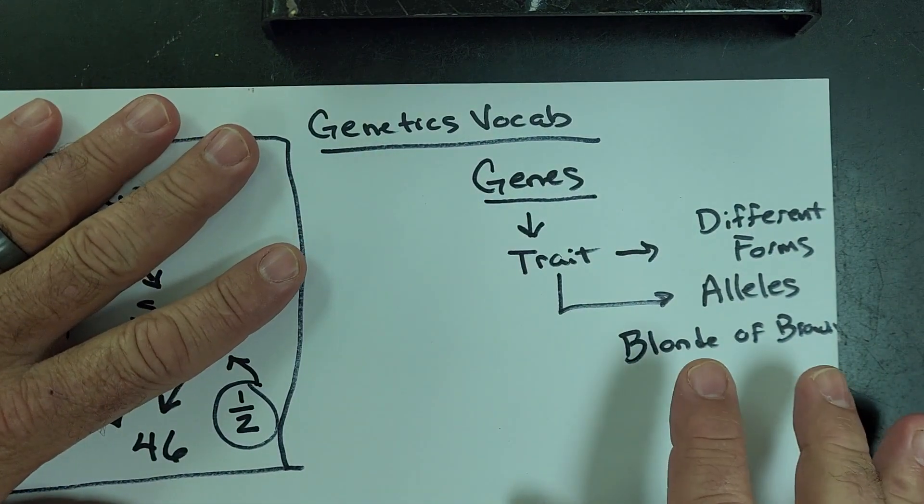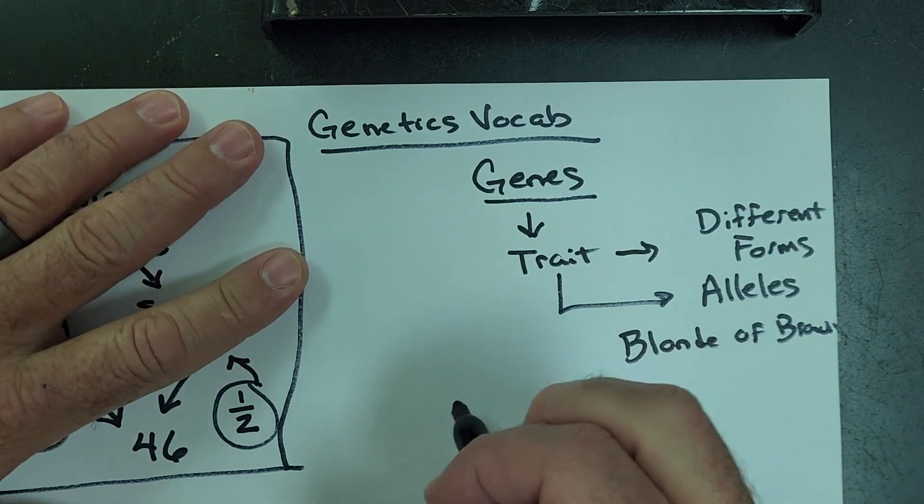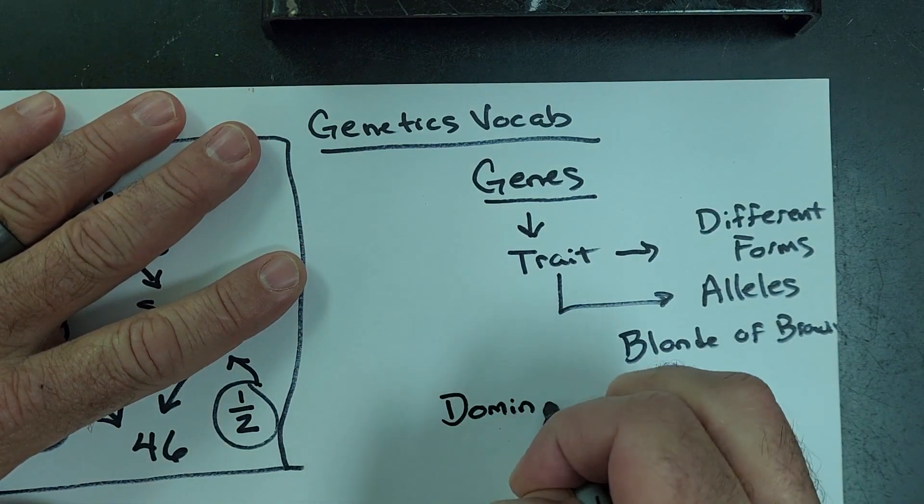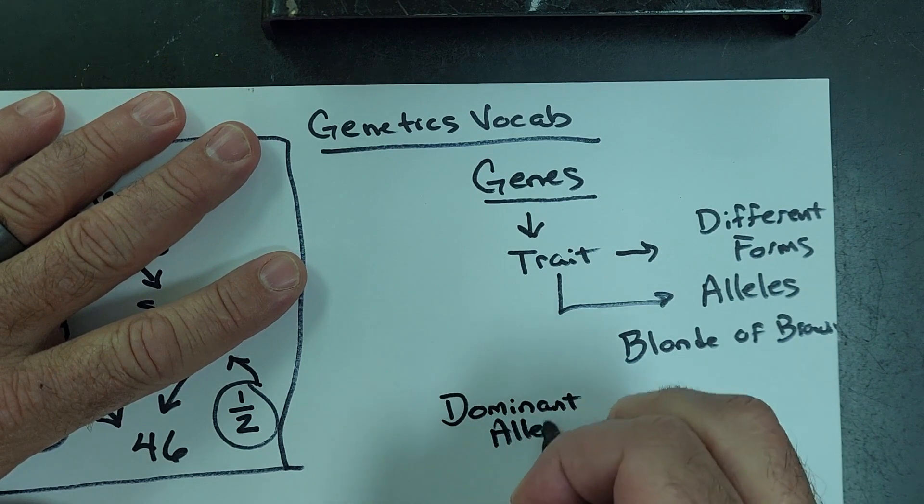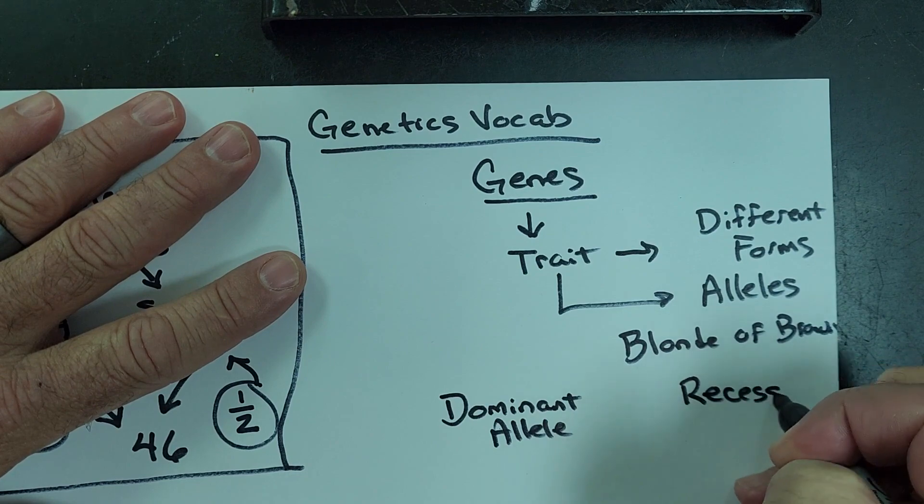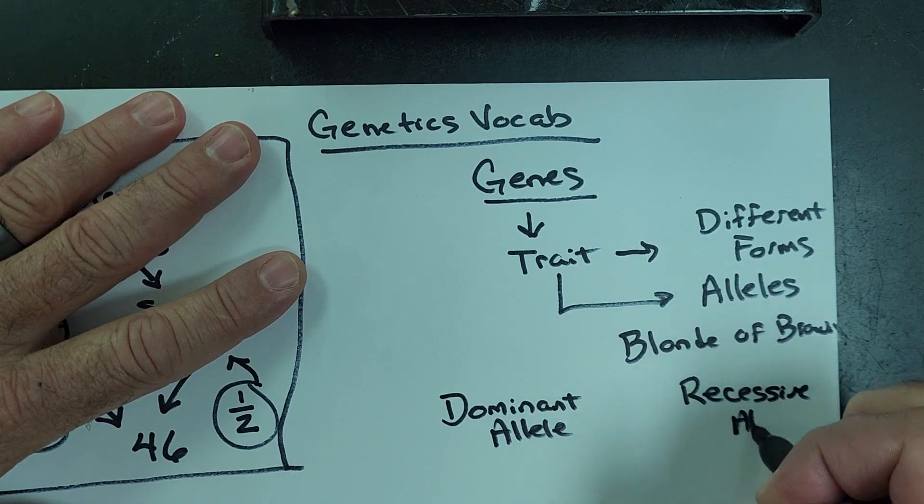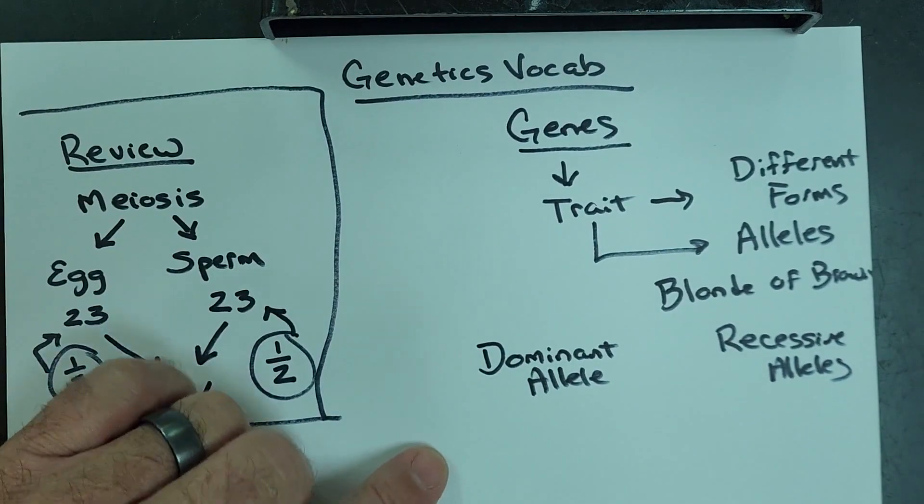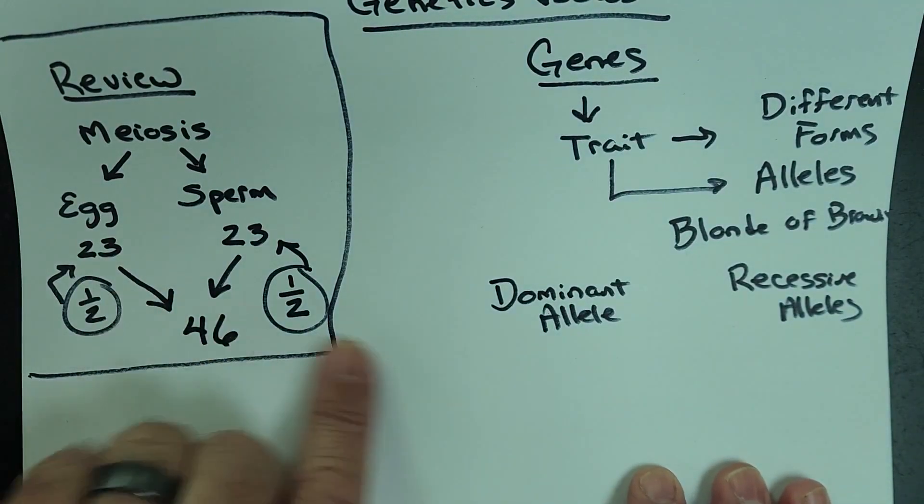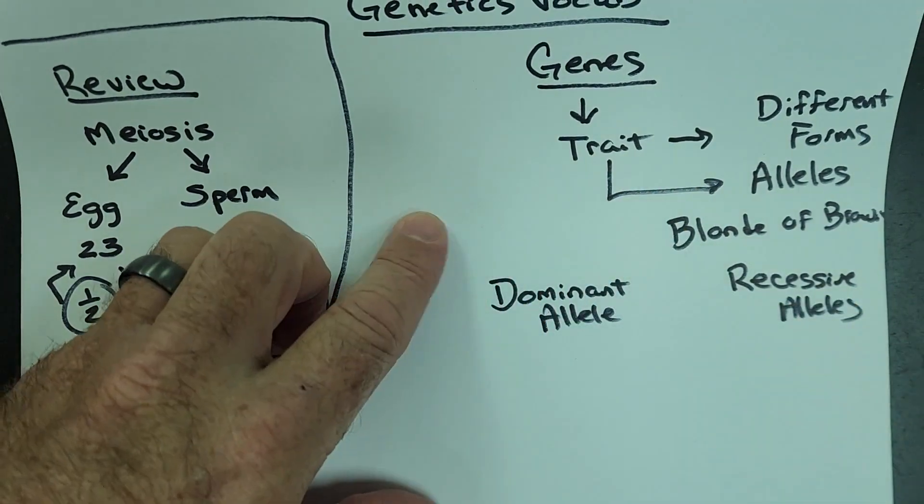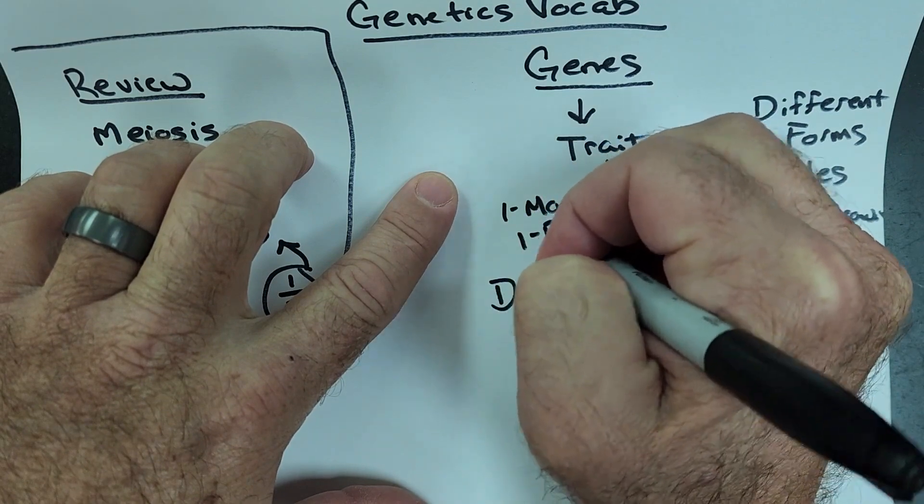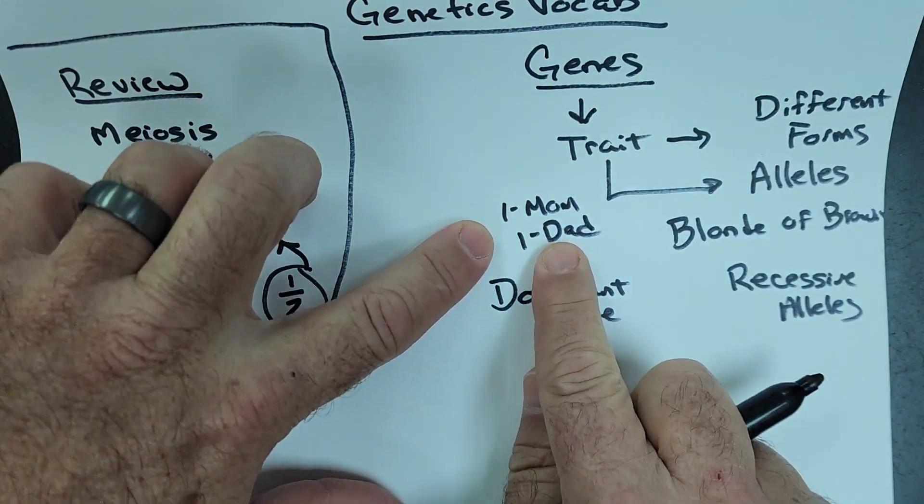In the case of these alleles, there are dominant alleles and there are recessive alleles. A dominant allele, if you get a copy, remember you get one copy of each gene from your mom and one copy from your dad. One from mom, one from dad. And that's for every gene you have.